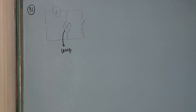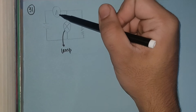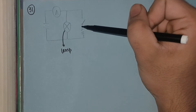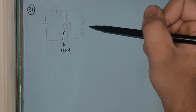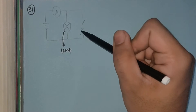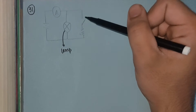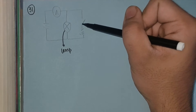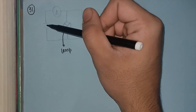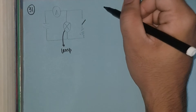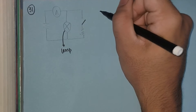Question 31. We have been given a very simple circuit which has one ammeter, a lamp, a resistor represented using the correct resistor symbol — a zigzag line — and then we have a switch and a battery. When the switch is open, we have been told that the ammeter reading is 2.4 amperes.